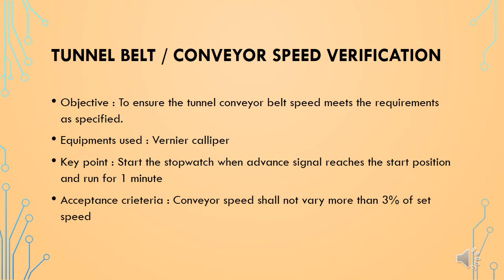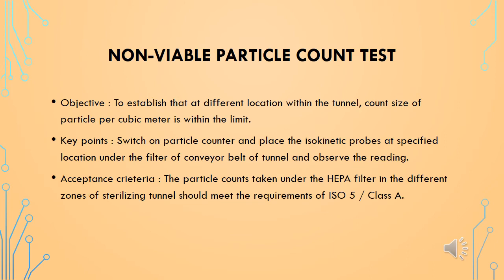The third qualification test is tunnel belt or conveyor speed verification. This test is performed to ensure the tunnel conveyor belt speed meets the required specified conditions. To perform this test, we need a vernier caliper and stopwatch. In the procedure, start the stopwatch when the advance signal reaches the start position and run for one minute. The acceptance criteria is that conveyor speed shall not vary more than three percent of the set speed.